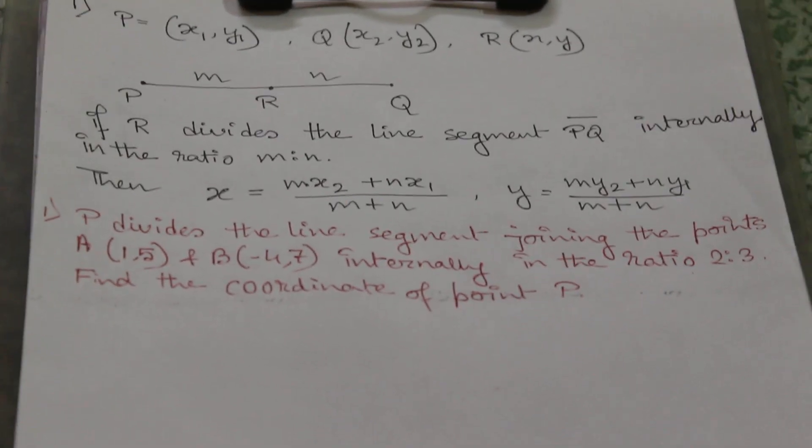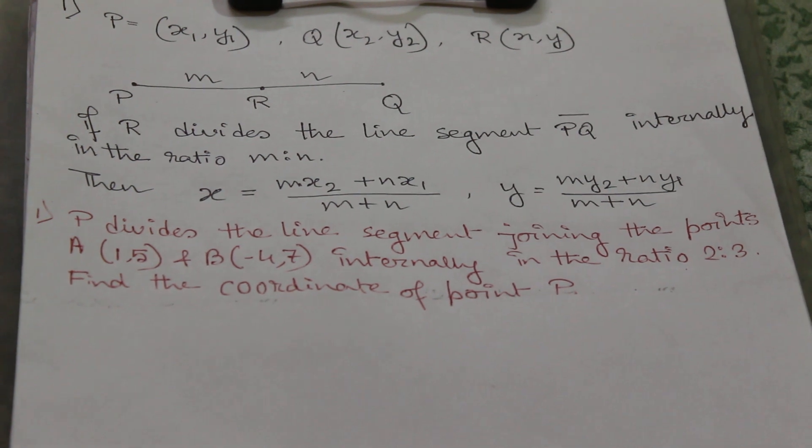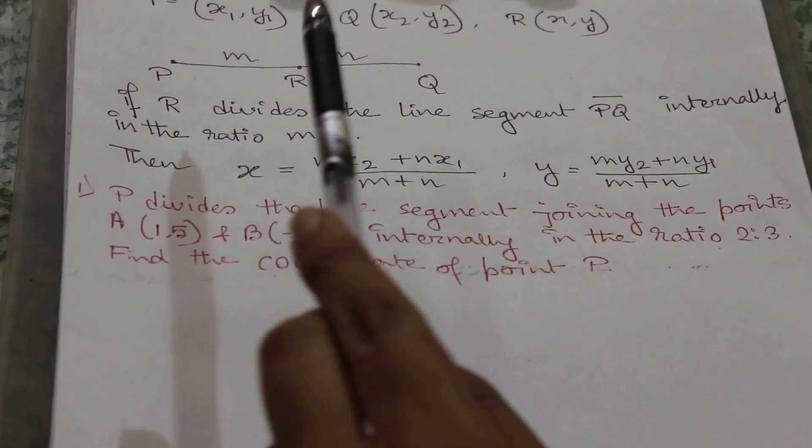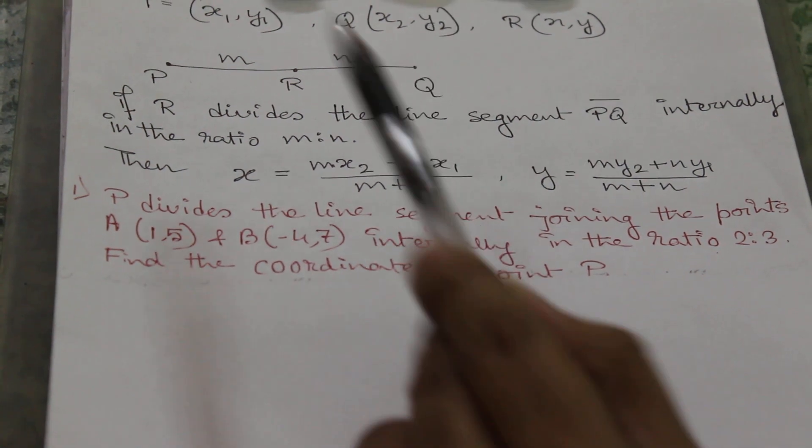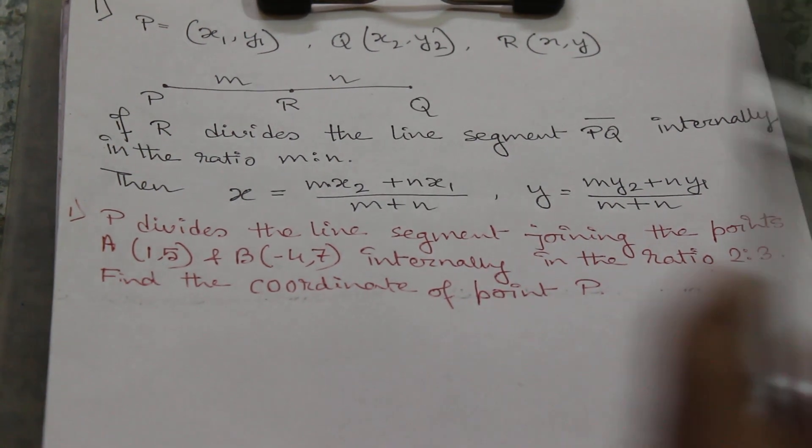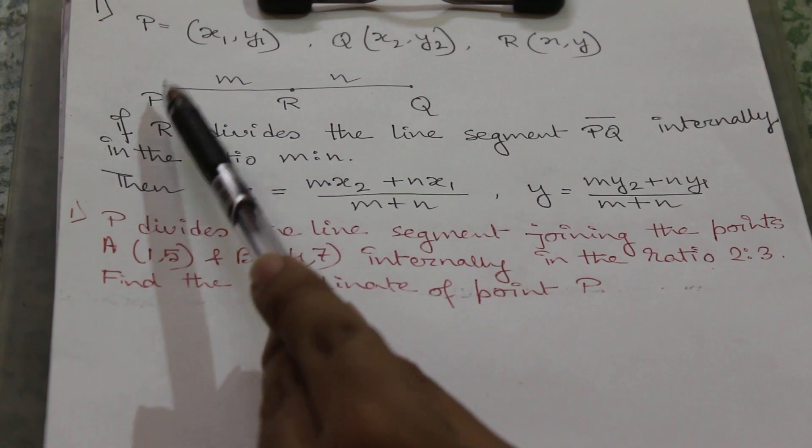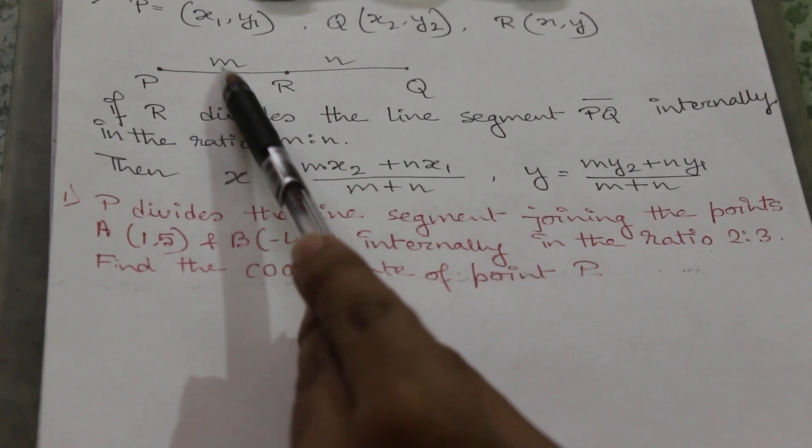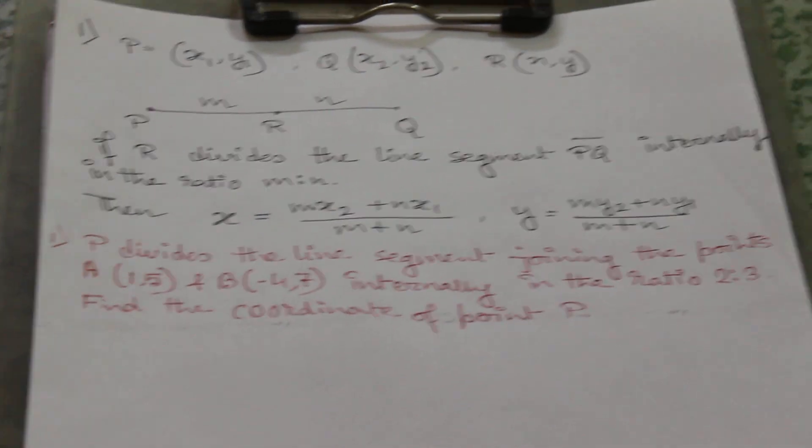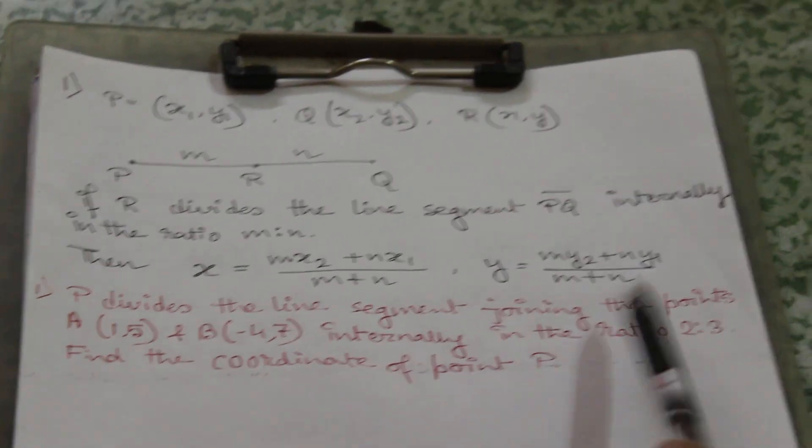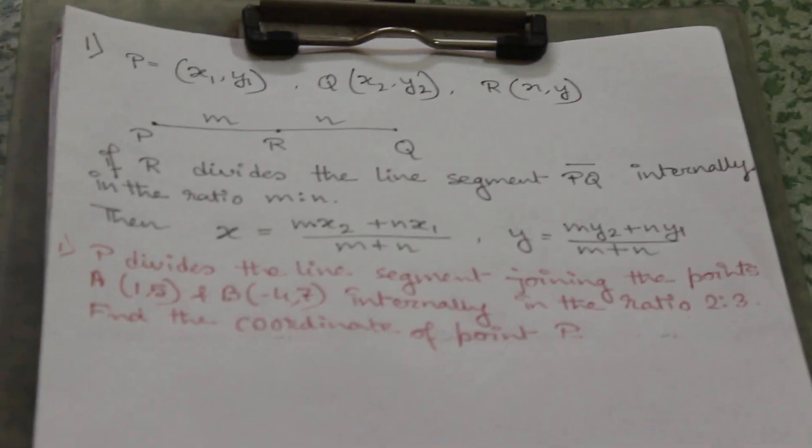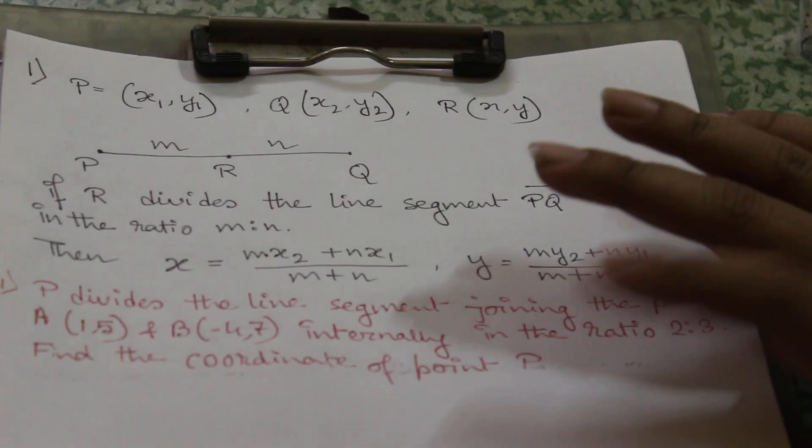Now we have to calculate the coordinate of point R which is equal to m into x2 plus n into x1. That means x coordinate of P will be multiplied with n and x coordinate of Q will be multiplied with m by m plus n. Similarly, y is equal to m·y2 plus n·y1 by m plus n. Now we will solve this example.